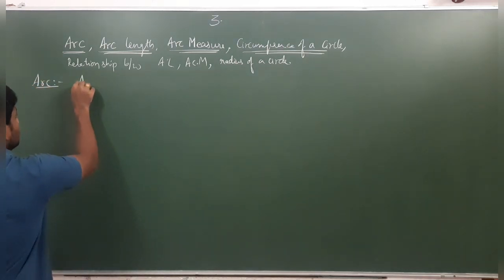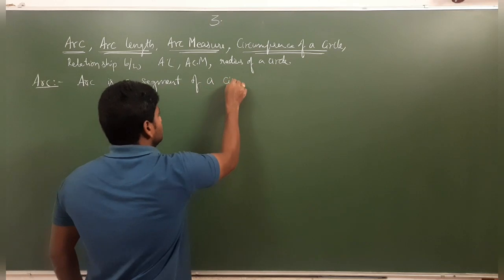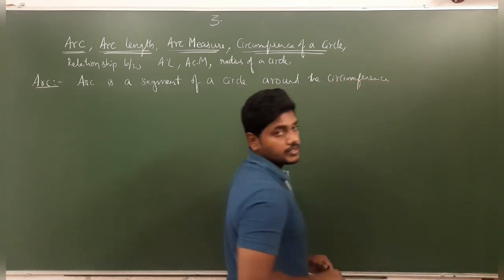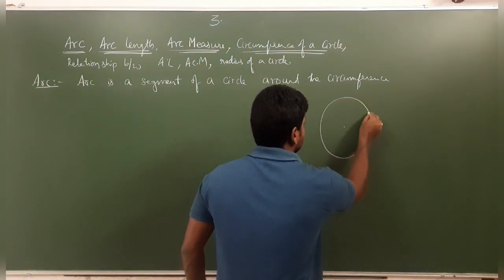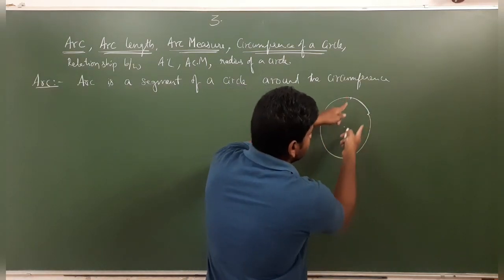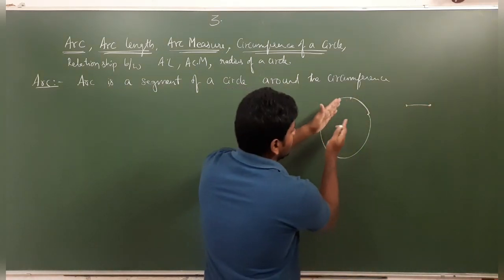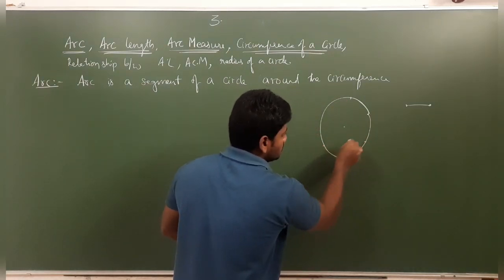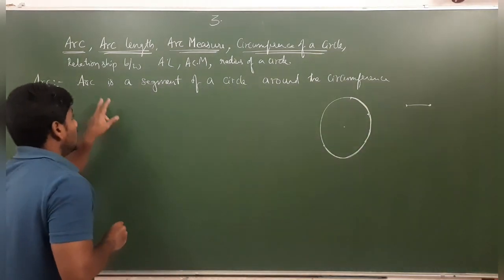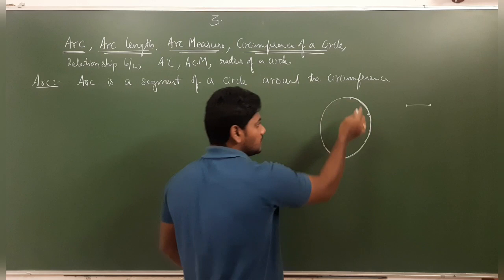An arc is a segment of a circle around the circumference — it has endpoints. For example, if we have a circle, the curved part from one point to another is an arc. That arc could be a small portion, a semicircle, or the total circle — all are considered arcs.